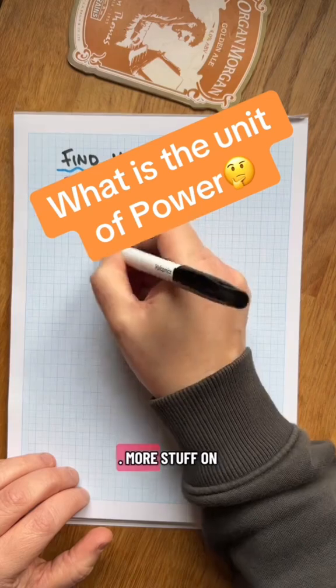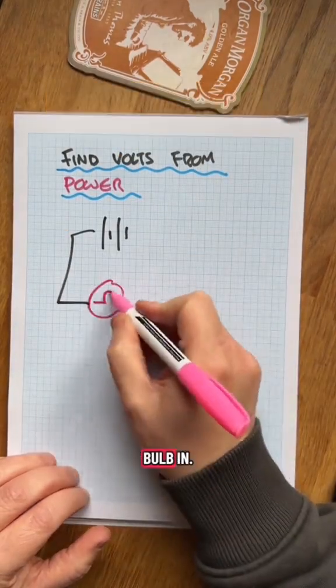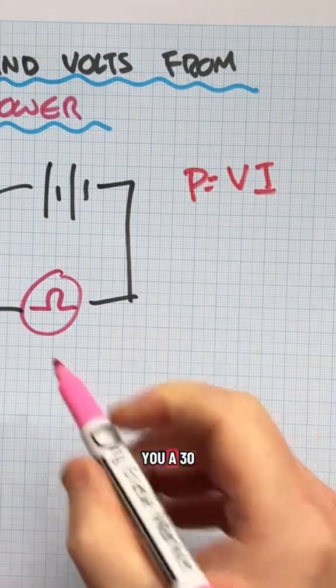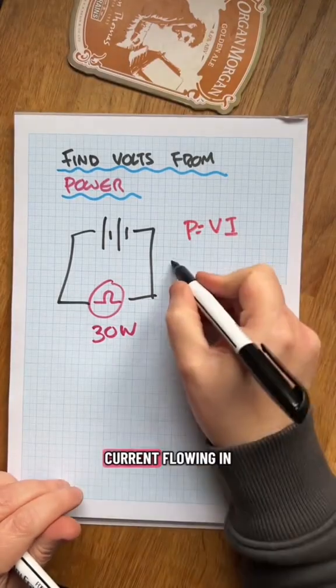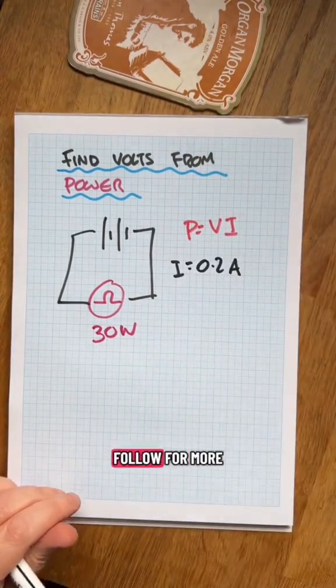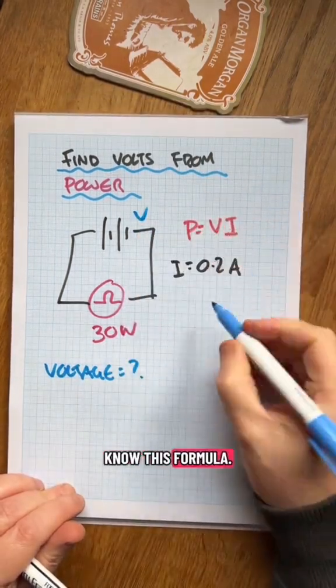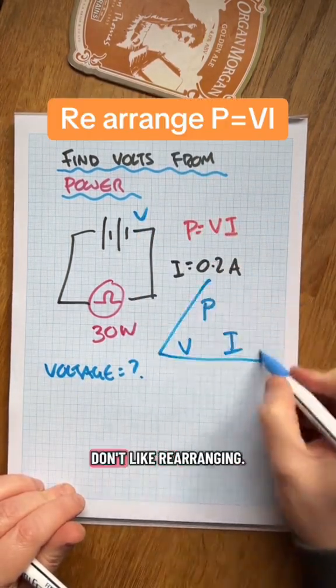Power is everything. Power is V times I. I'm going to find the voltage. We're using power is V times I. I'm going to give you a 30 watt bulb with 0.2 amps. Don't forget to follow and like. What is the voltage we need in this circuit?